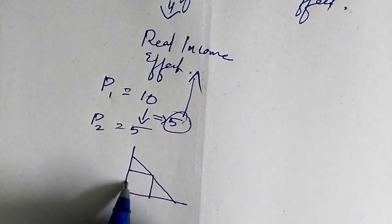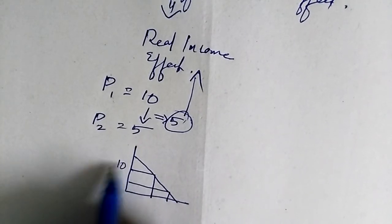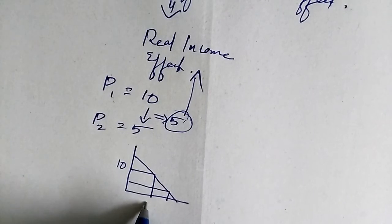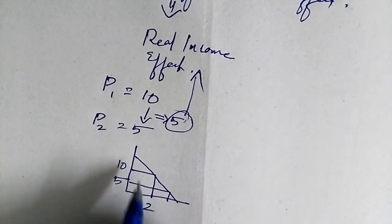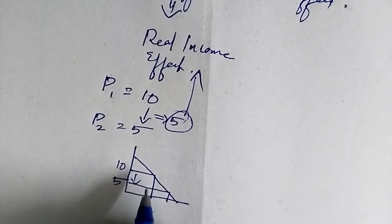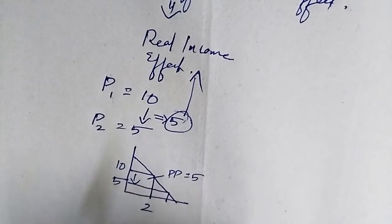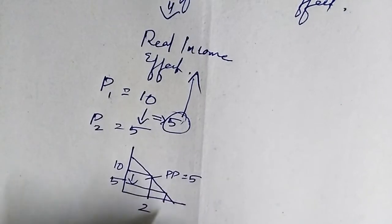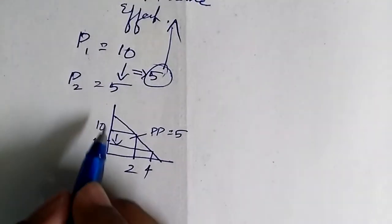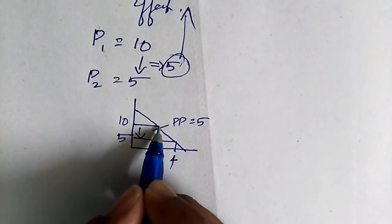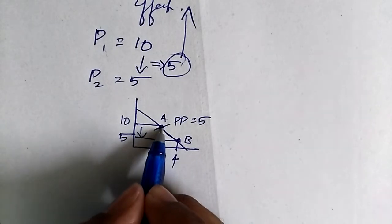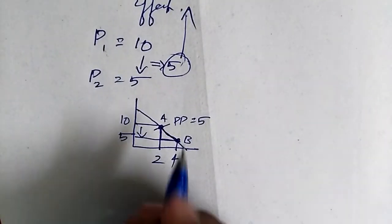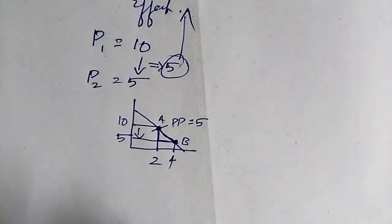That means when a product is priced at 10 rupees, you are buying two units. When the price is decreased to 5, your purchasing power or real income has increased by 5 rupees. So this 5 rupees can be used for buying additional quantity of the product. When you buy additional quantity, you can see that point A has been changed to point B. This slope is known as a downward slope, and this is one reason why your demand curve is sloping downward from A to B.